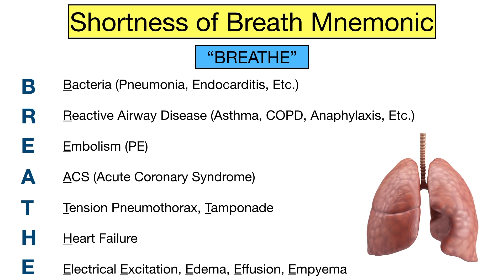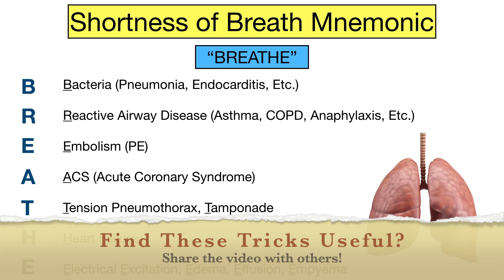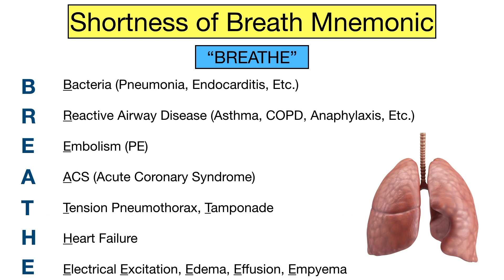The B stands for bacteria, which helps you remember things like pneumonia or endocarditis. R stands for reactive airway disease, used to remember conditions that cause bronchospasm or wheezing, such as asthma, COPD, or anaphylaxis. E stands for embolism, to help you remember pulmonary embolism. A stands for acute coronary syndrome or ACS. T helps you remember tension pneumothorax or cardiac tamponade. H stands for heart failure. The final E helps you remember electrical excitation or arrhythmias, along with pulmonary edema, pleural effusion, or empyema.